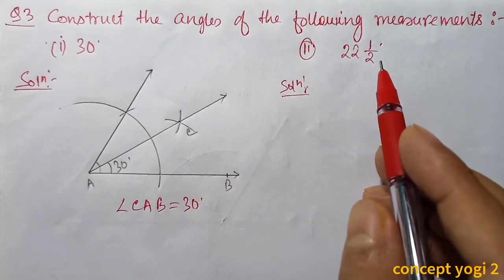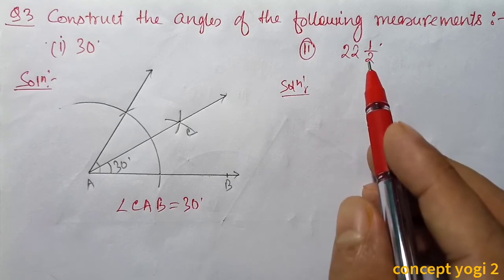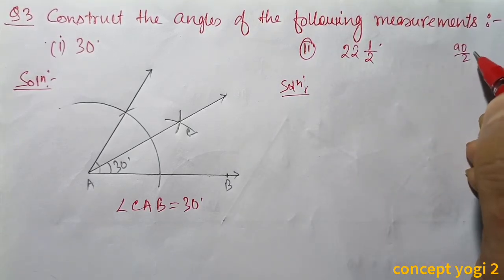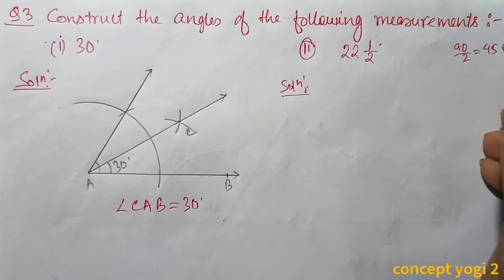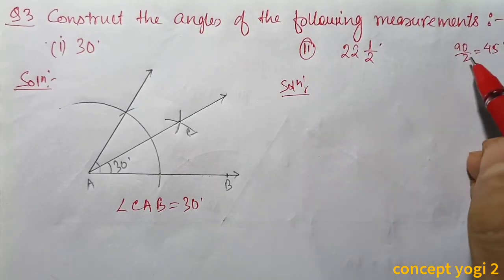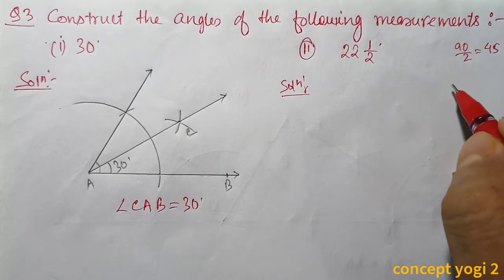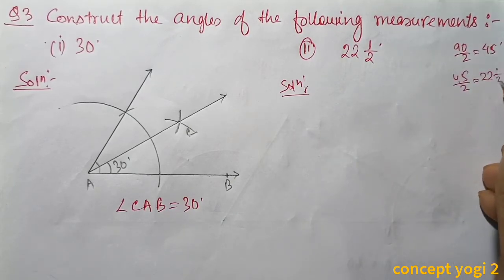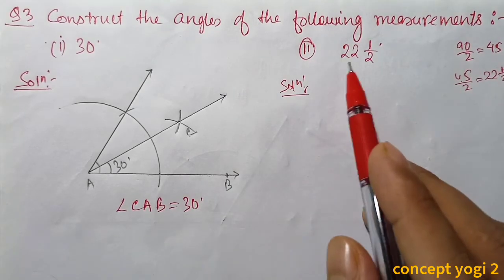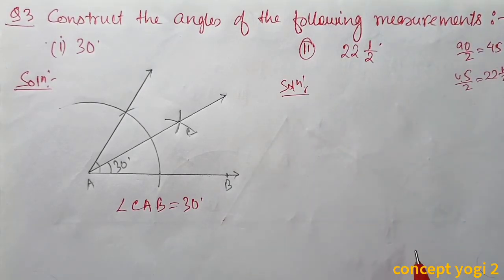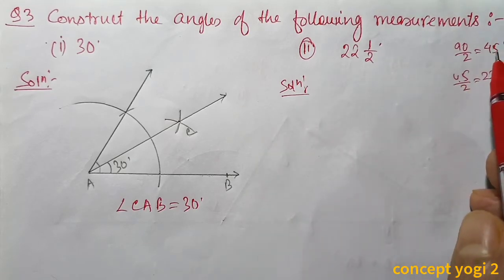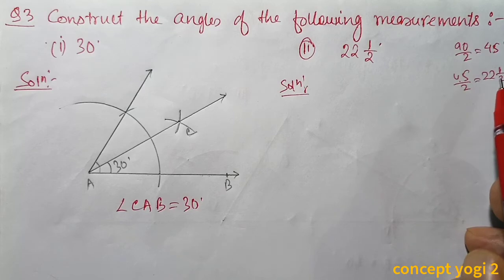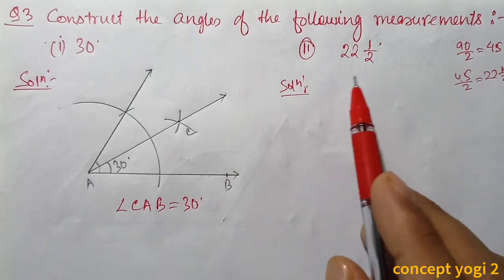Question number 2: 22 and a half degrees. To draw 22.5 degrees: 90 degrees bisected gives 45 degrees, and 45 degrees bisected gives 22.5 degrees. So first we draw 90 degrees, then bisect to get 45 degrees, then bisect again to get 22.5 degrees.